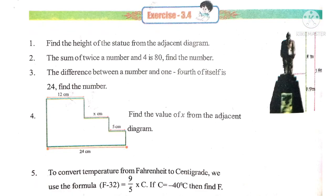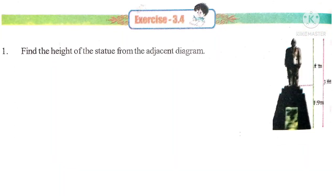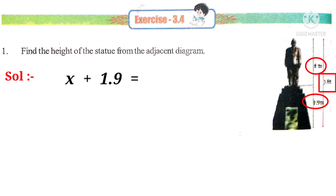Now, let us do Exercise 3.4. Let us take the first problem. Find the height of the statue from the adjacent diagram. See the figure. The height of the statue is x meters. The height of the base is 1.9 meters and the total height is 3.6 meters.